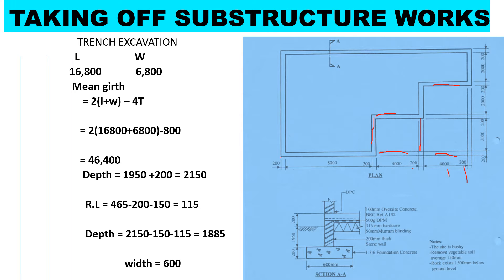We take each side and place it accordingly so that at the end of the day we have a rectangle. We take the entire length and the entire width. Our length is 16,800 millimeters, and our width is 200 plus 2000 plus 200 plus 2000 plus 200 plus 2000 plus 200, which gives us 6,800 millimeters.